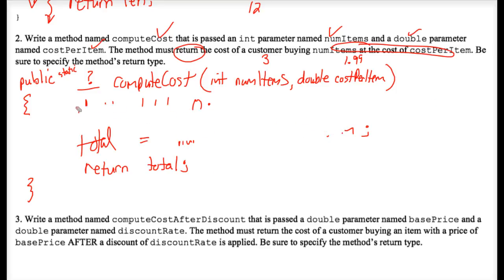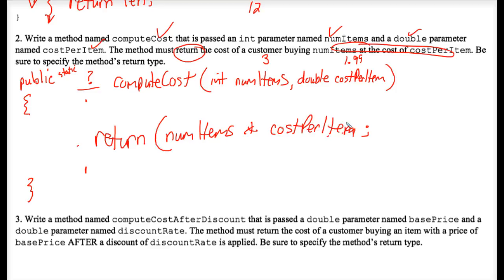Or we could just do this all in one line of code. And we could just say return numitems times cost per item. Some students like to put parentheses around this product. That's fine but it's unnecessary because the computer will do the multiplication before it does the return.